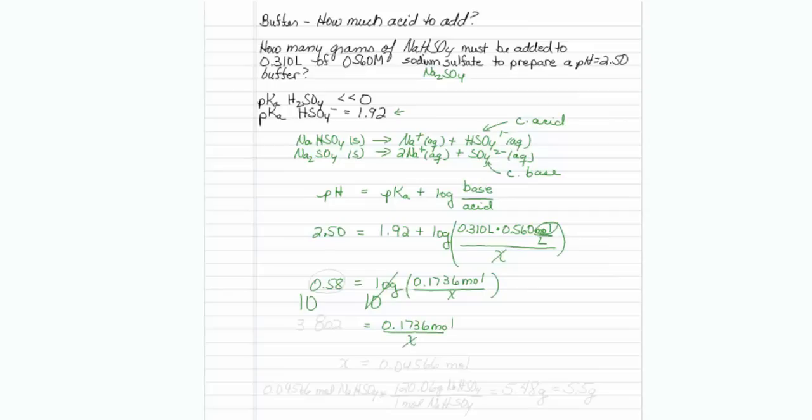10 raised to the 0.58 turns out to be 3.802. So swapping things around, x should be 0.1736 divided by 3.802.